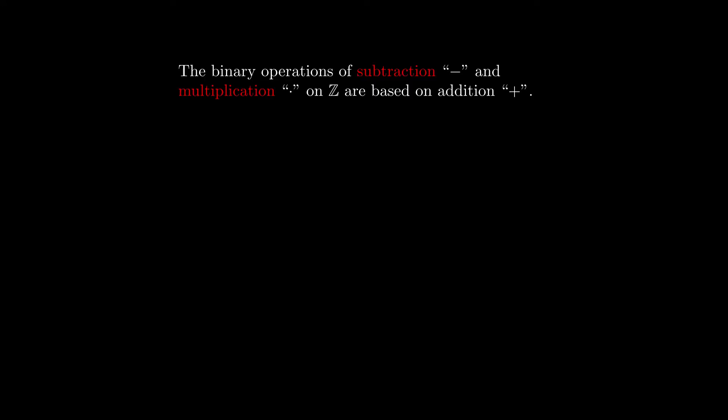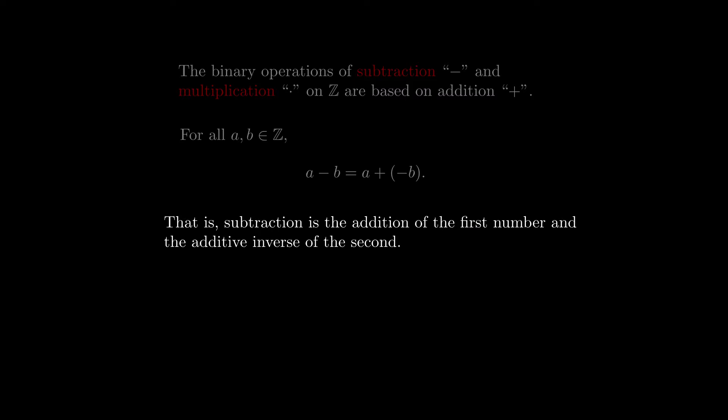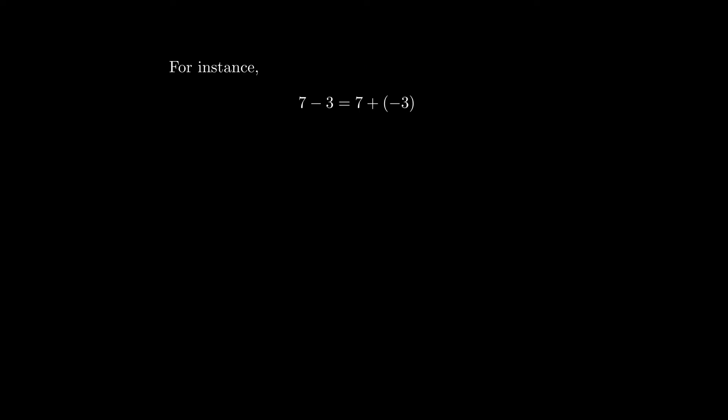The integers also have subtraction and multiplication, and they're both based on addition. For two integers a and b, subtraction a minus b is defined as a plus the additive inverse of b. For example, 7 minus 3 means 7 plus the additive inverse of 3. Similarly, negative 6 minus 8 is the same as negative 6 plus the additive inverse of 8.